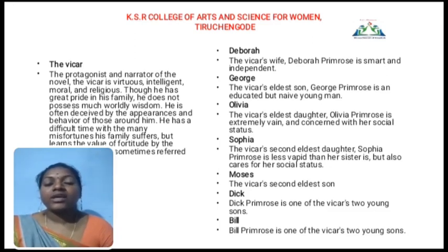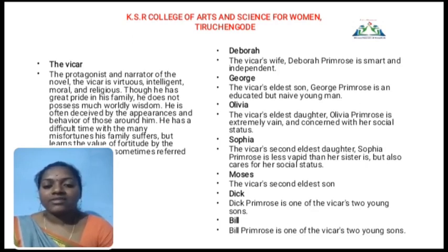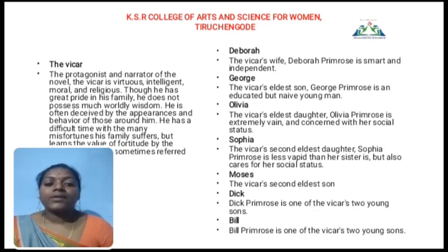He is working in agriculture and he loves his family. The next character is Deborah — the Vicar's wife. Deborah Primrose is very smart, very intelligent, and very independent. She loves cooking and is an educated person.